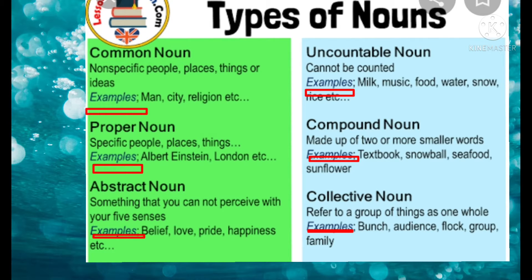Then, abstract noun — something that you cannot perceive with your five senses. You cannot touch it, but you can feel it. That will come under abstract noun. Examples: believe, love, pride, happiness, etc.